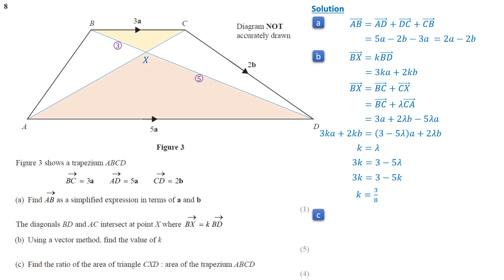Triangle BXC and triangle AXD are similar triangles, as the corresponding angles are the same. So the ratio of the sides of the smaller triangle to the larger triangle is 3 to 5. The ratio of their areas is the square of the ratio of corresponding sides, so the ratio of areas is 9 to 25. Triangles CXB and CXD have the same height, so the ratio of their areas equals the ratio of their bases. The area of triangle CXD is 5 over 3 times the area of triangle CXB, which gives 15 square units.